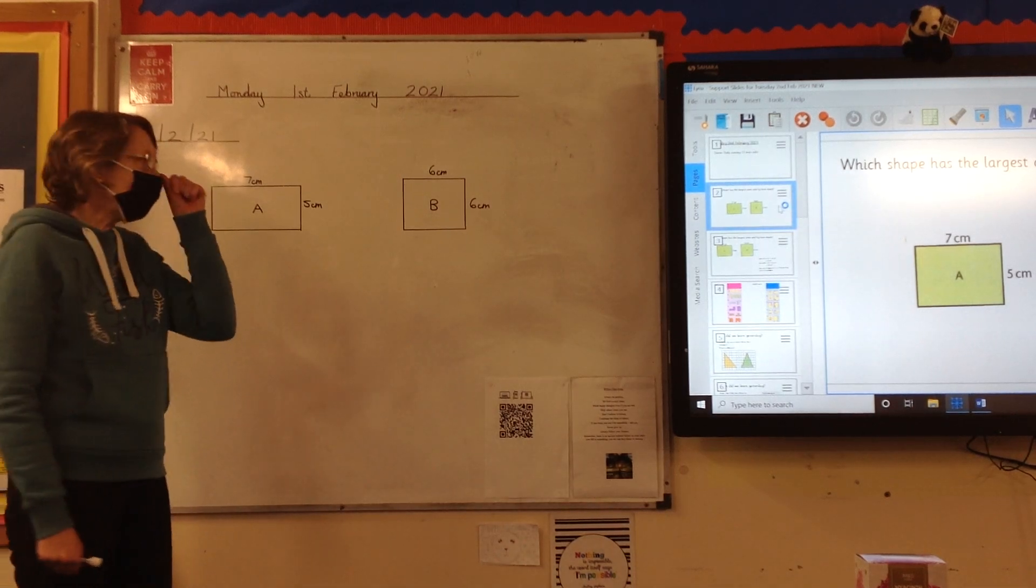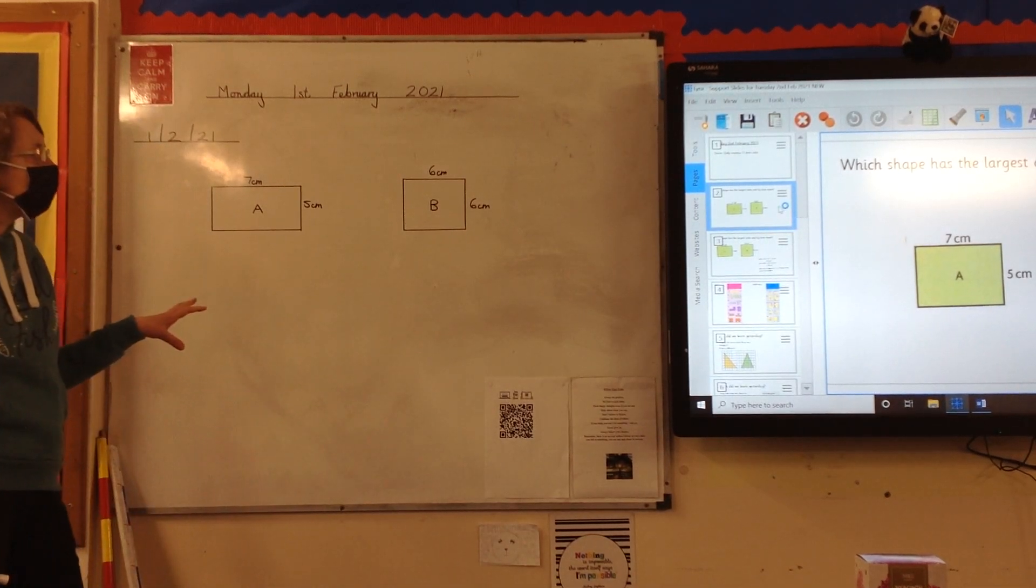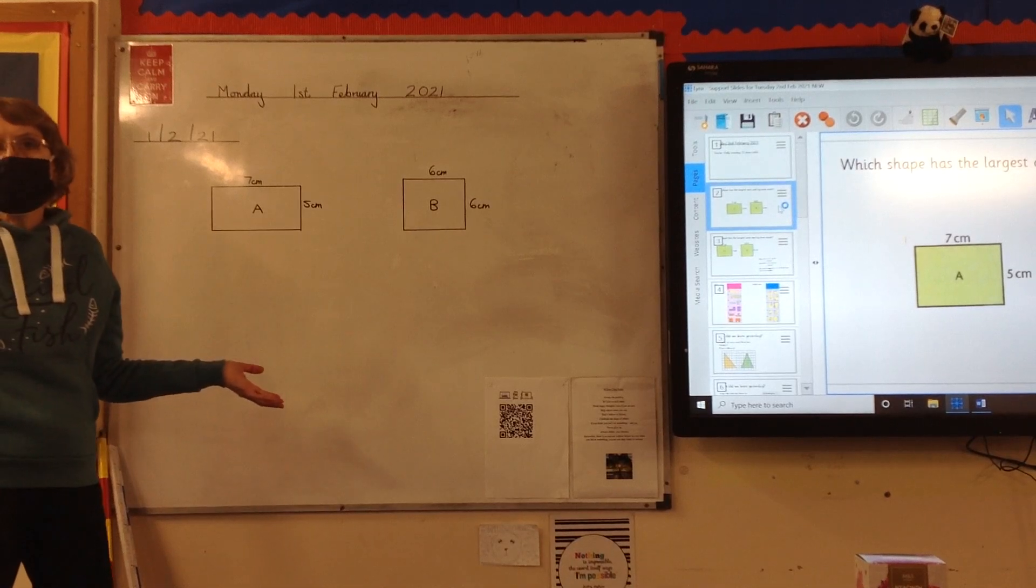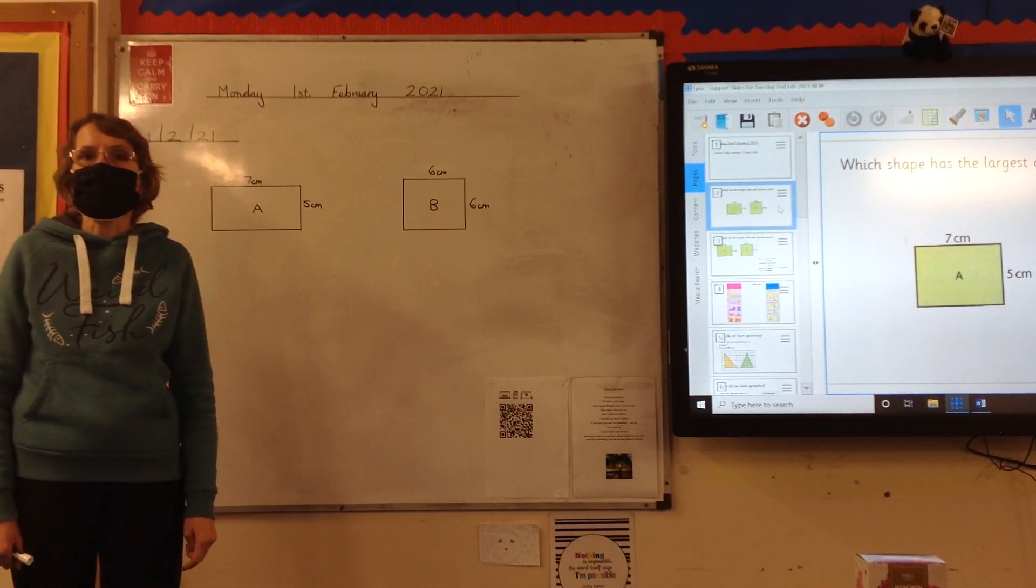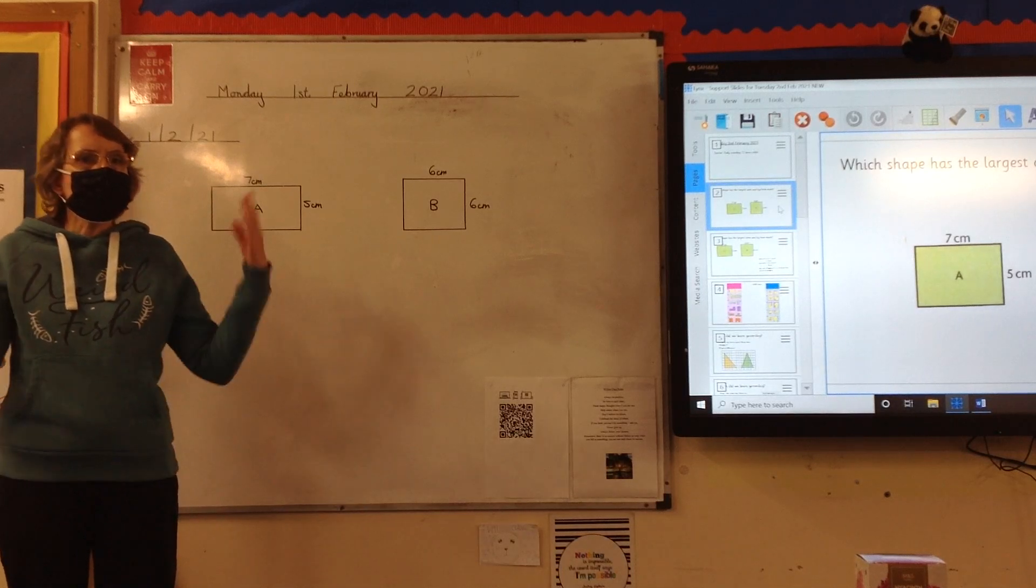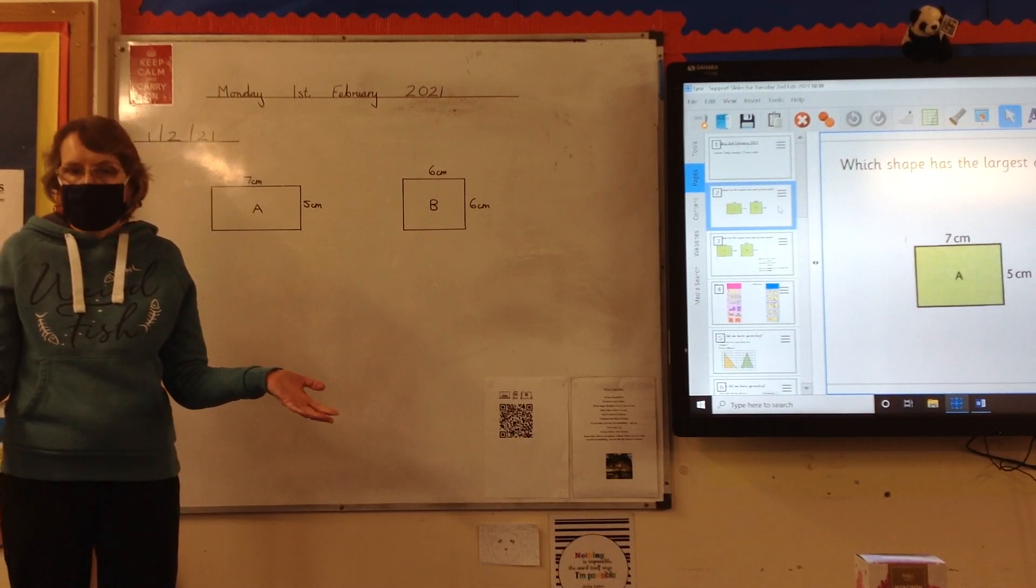To start our maths lesson today, we're going to remind ourselves of the work we've done on area. How do we find the area of a rectangle? Area equals length times width.